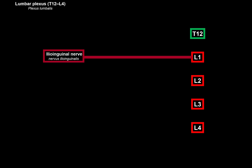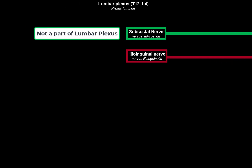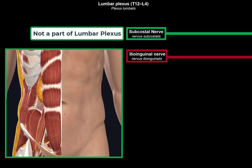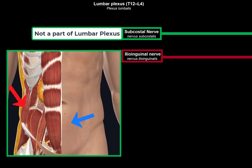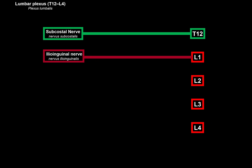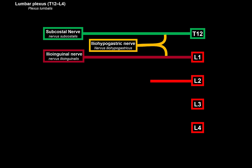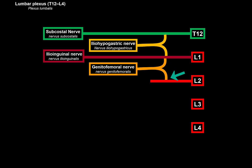L1 gives off the ilioinguinal nerve as its primary branch. T12 gives the subcostal nerve, which is not part of the lumbar plexus but has sensory function for the skin of the lower abdomen and inguinal region, and motor function for the abdominal wall muscles. The subcostal nerve gives off a branch that joins a branch of L1 to form the iliohypogastric nerve.